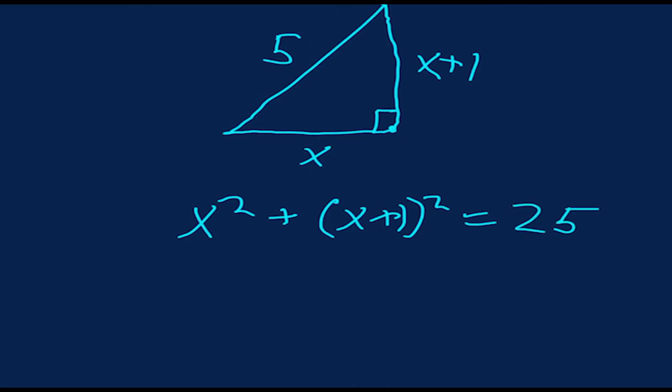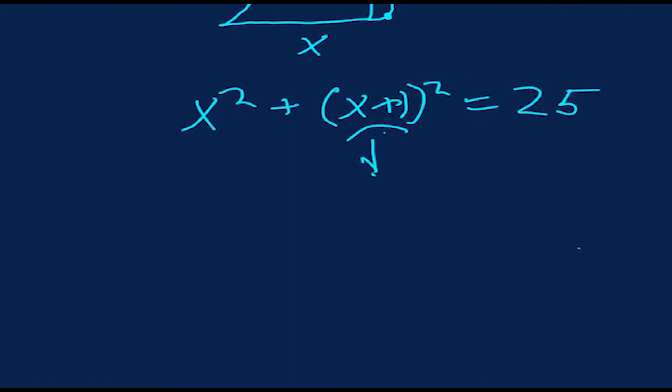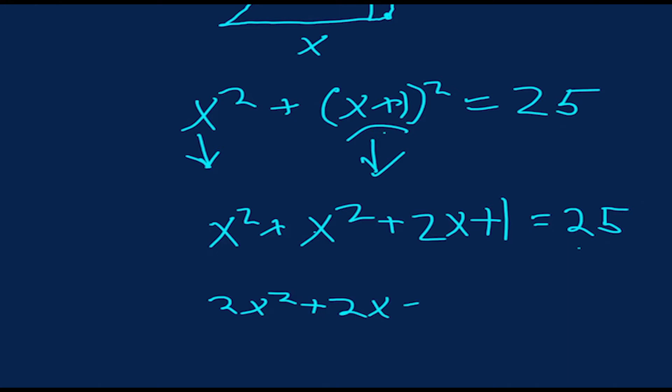Now, we need to foil out this component here. So to do that, we take X plus one times X plus one, which gives us X squared plus two X plus one. And then we can still take down this X squared here from the bottom. So you get X squared plus X squared plus two X plus one equals 25. Now we just combine like terms and want to get all of our values onto one side of the equation. So we get two X squared plus two X minus 24 equals zero.